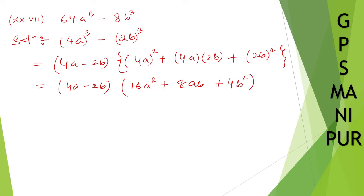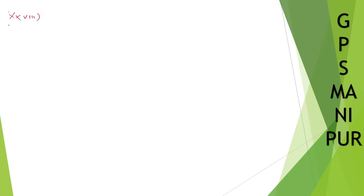Some may take 2 as a common factor as well — you can do that. Otherwise this is the answer. Now let us do the next question, roman number 28. We have x cubed by 8 plus 216y cubed.